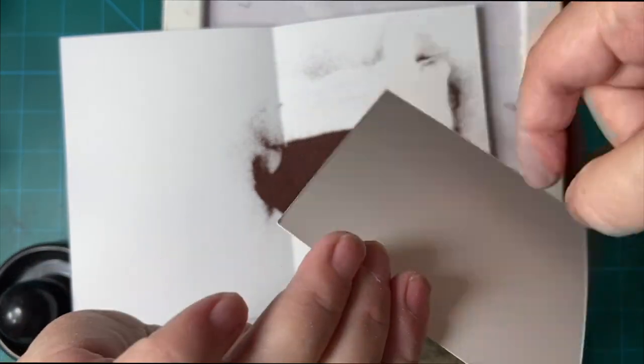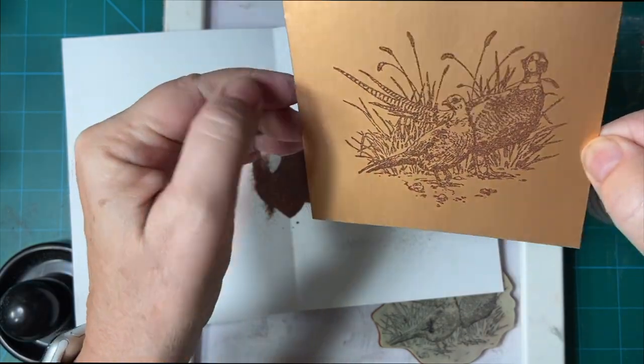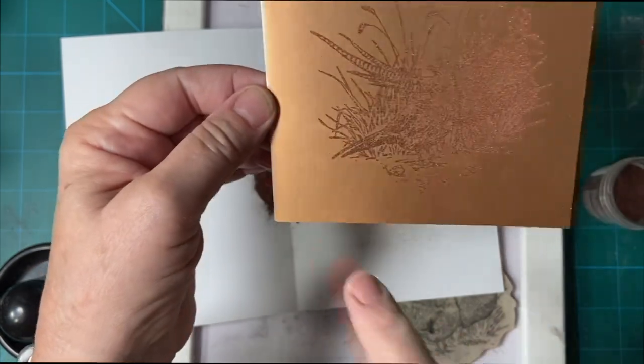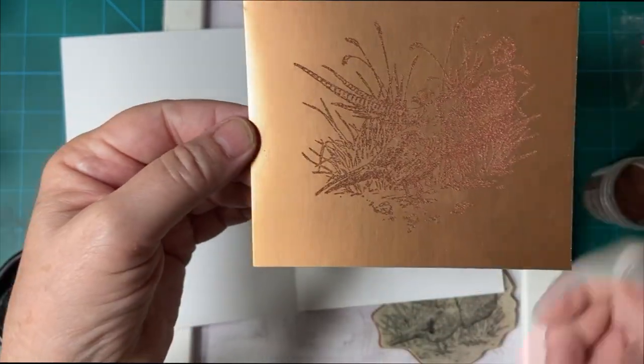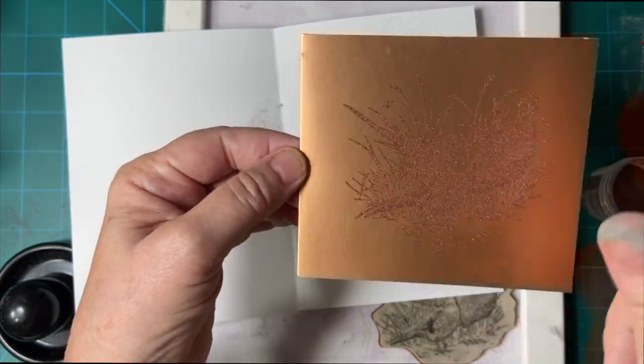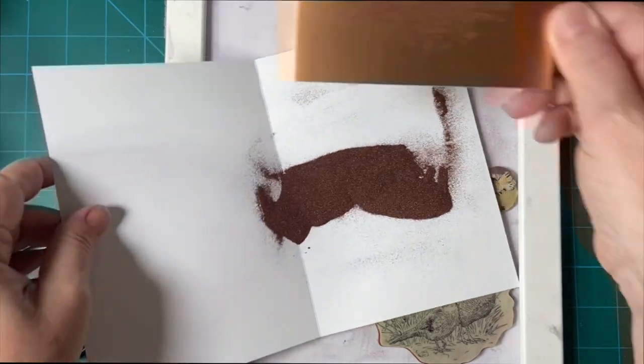I just tap. Gently tap. But it looks like there's no stray pieces anywhere. Normally if there were I would take a little dry paint brush and get that away. But it looks good. Fantastic.